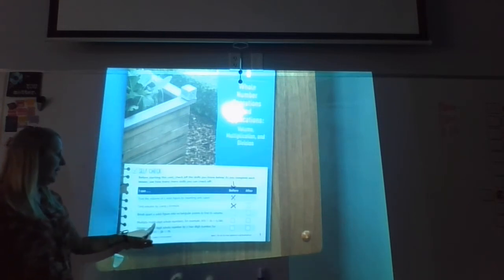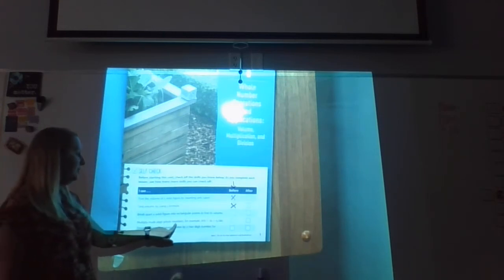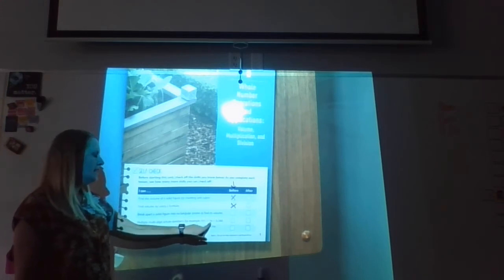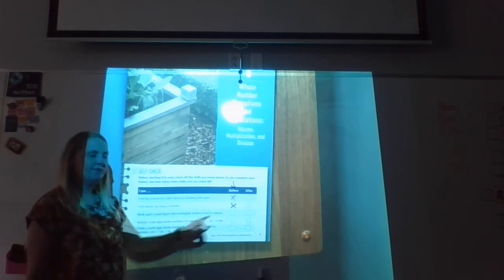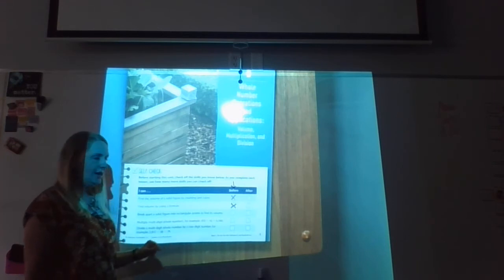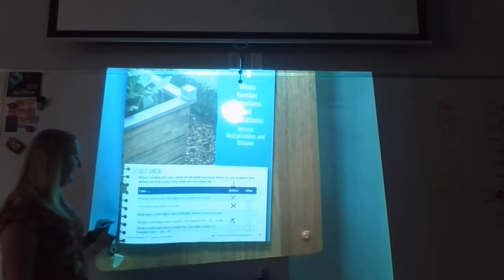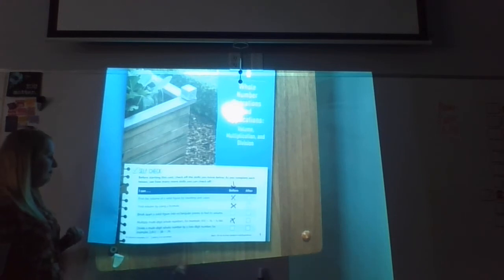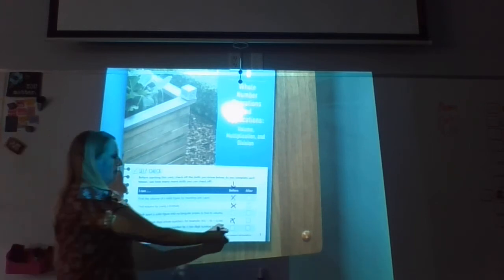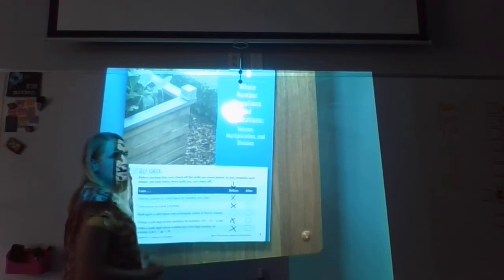I can multiply multi-digit whole numbers. For example, 410 times 16 equals 6560. Do you know how to do that? If you do, put an X. And then the last one, I can divide a multi-digit whole number by a two-digit number. For example, 2812 divided by 38 equals 74. Is that something you can do? If so, put an X. If not, leave it blank.